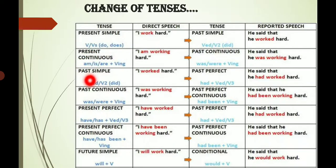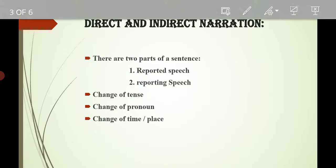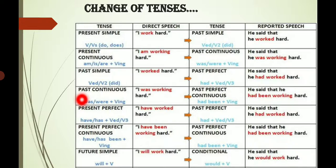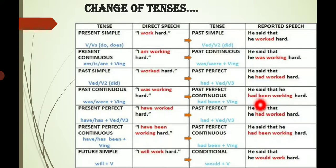Past simple: if the sentence is in past simple or past indefinite tense — when you see the second form of verb or 'did' — you will change it into past perfect. In past perfect tense you use the helping verb 'had' and the third form of verb. For example: 'He said that he had worked hard.' Next, if the sentence is in past continuous — 'was/were' plus first form with '-ing' — you change it into past perfect continuous, using 'had been' and the '-ing' form of the verb. For example: 'He said that he had been working hard.'